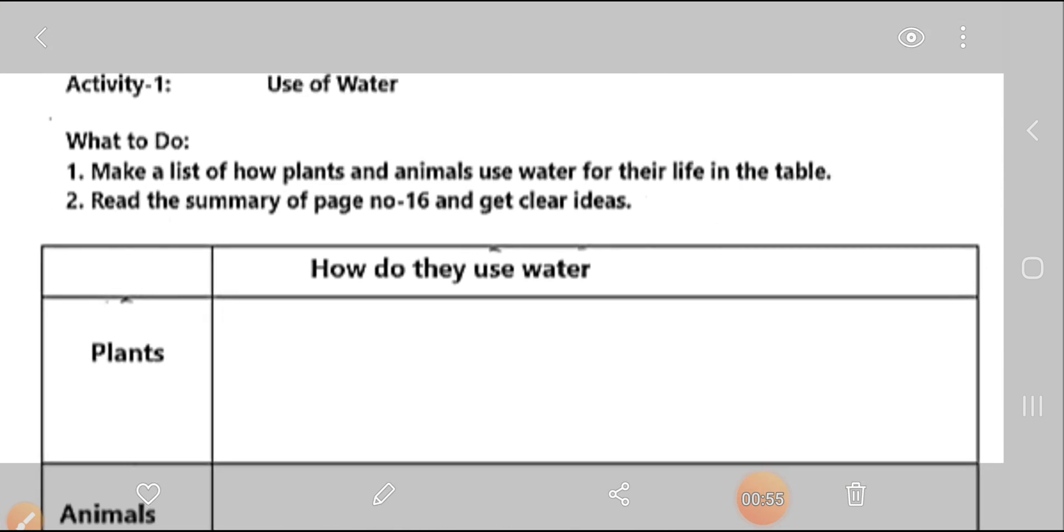Here is the activity, use of water. So what to do? First, you make a list of how plants and animals use water for their life in the table. So this is a table guys, here is plants, here animals, how do they use water.